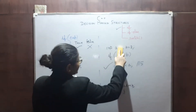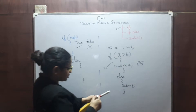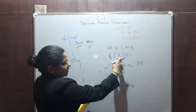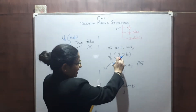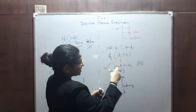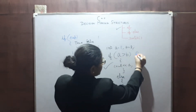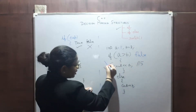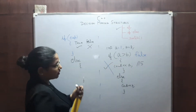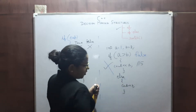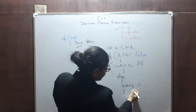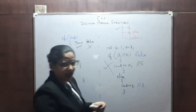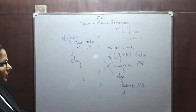Suppose if we make A equal to 1. Now A is not greater than B, so this expression comes out to be false. This if block will not be executed. What will be executed? The else block. That means in the output we will get B. B's value is 2, so we will get 2 in the output.